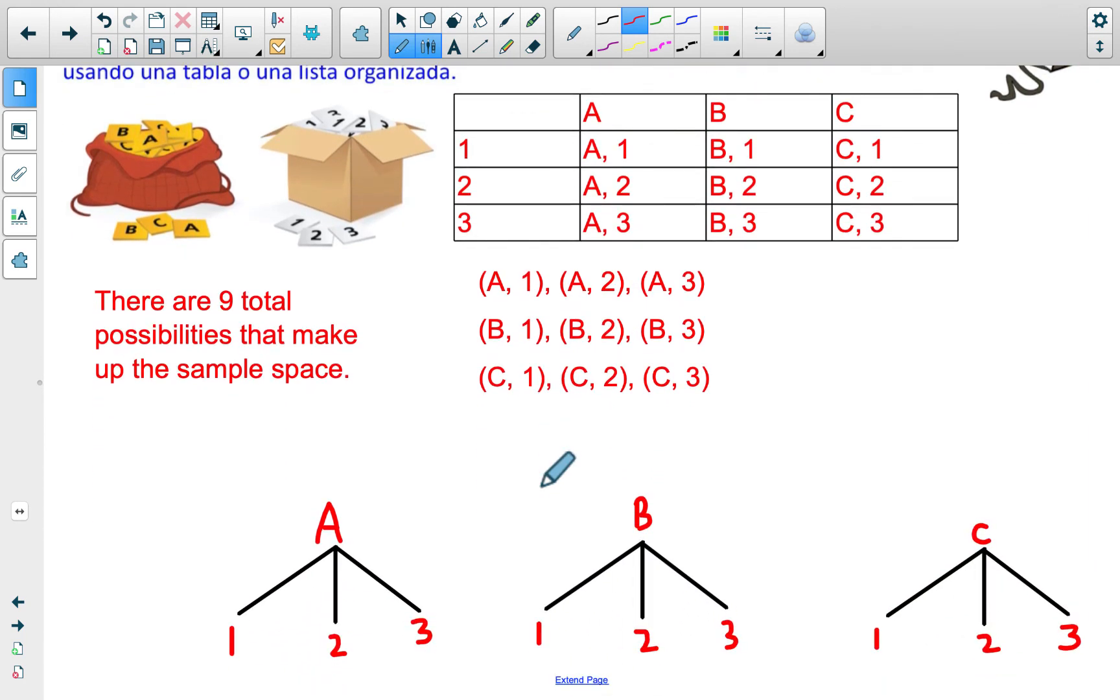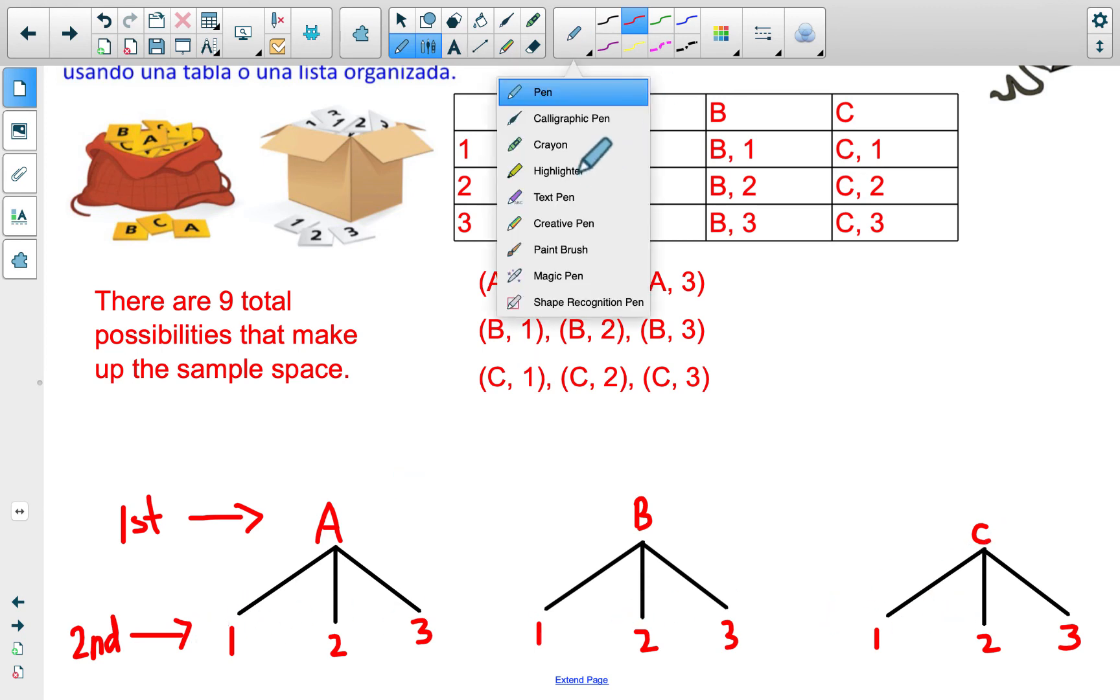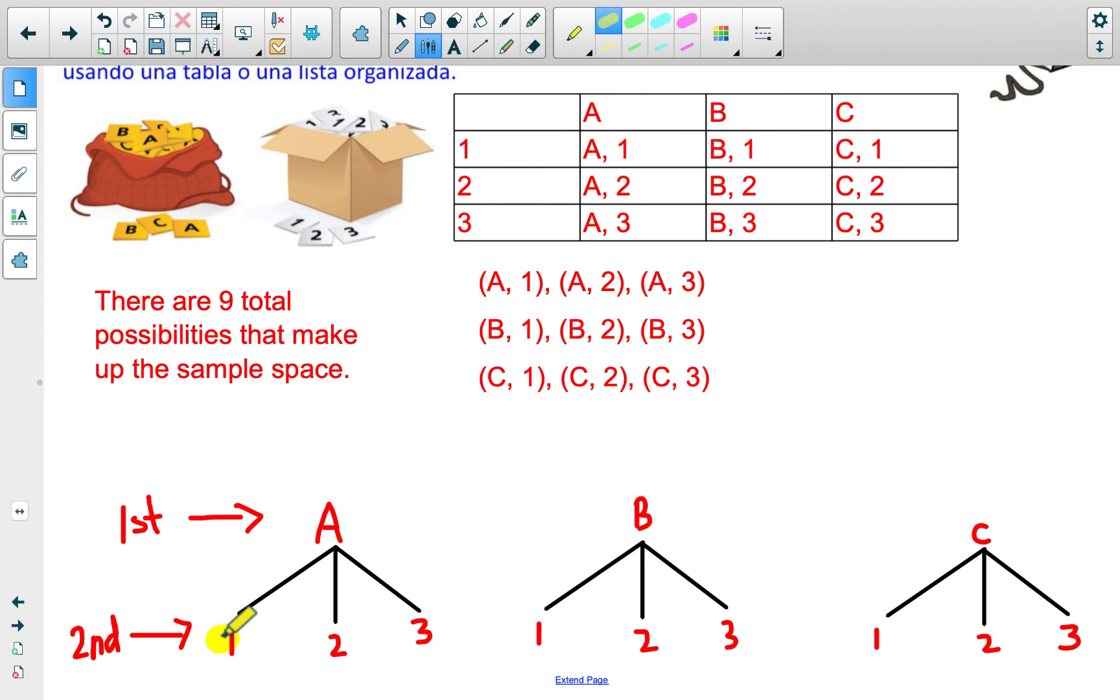I also went ahead and created a neater tree diagram going vertically here. This top part represents the first event. This bottom part is second. You could also switch the order. It's not going to make a difference of the combinations of answers. But at first, if I got an A, I could then get a 1, 2, or 3, B, 1, 2, or 3, and C, 1, 2, or 3.